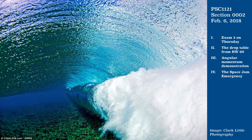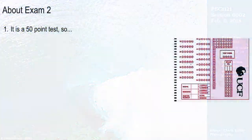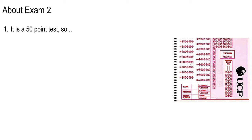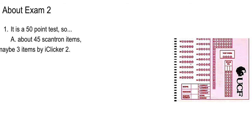So as I mentioned, we're going to have exam 2 on Thursday. The online section will have it on Wednesday. As before, it is a 50-point test. It's going to be maybe 45 or so Scantron items and then a couple — 3 iClicker 2 items. Those will probably be calculations or some kind of multi-part — more than just a multiple choice.